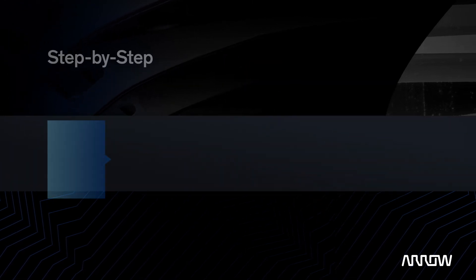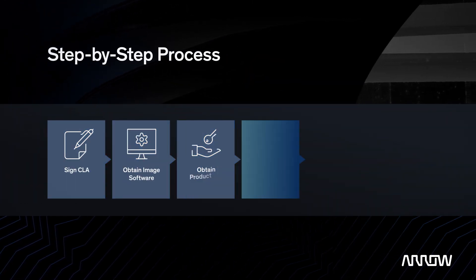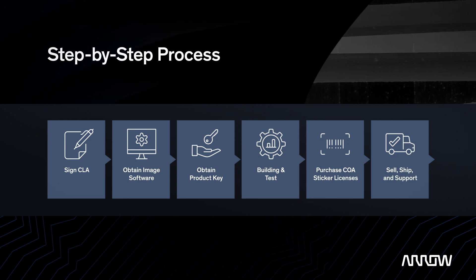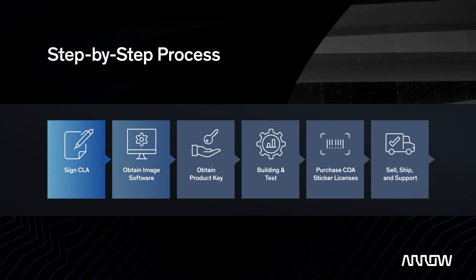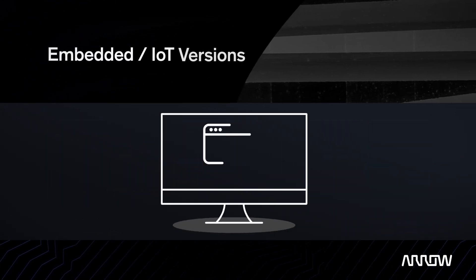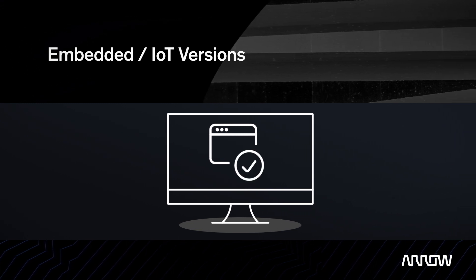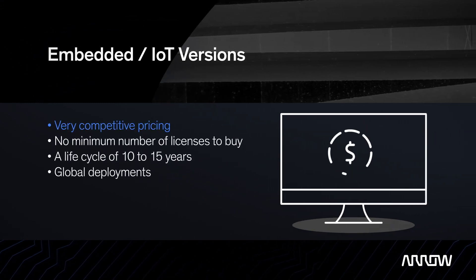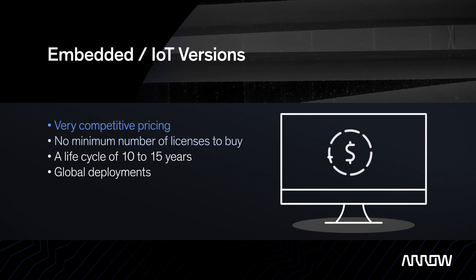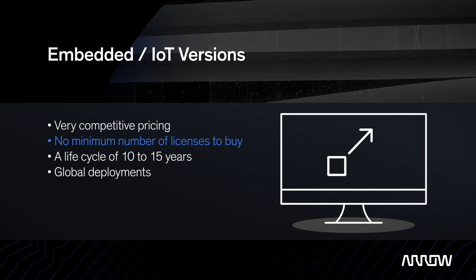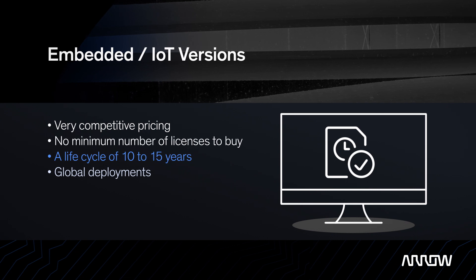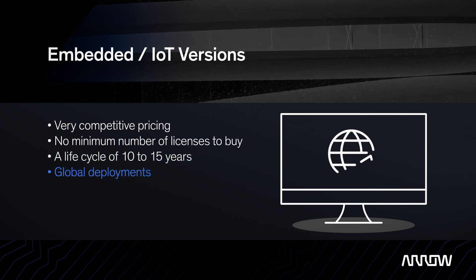This video highlights the process for obtaining Microsoft Embedded and IoT versions of the operating systems. The Embedded IoT versions are strongly recommended as they offer many advantages, including very competitive pricing, no minimum number of licenses to buy, a lifecycle of 10 to 15 years, and global deployments.